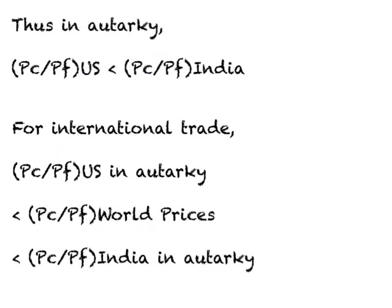Based on the assumptions we have made, we have already established that in autarky, there will be a difference in relative prices between the US and India. This difference becomes the basis for trade, and as long as we can find world prices which lie between these two autarky prices, international trade will take place. Since the relative price of clothing in the US is lower in autarky, the US will be exporting clothing.